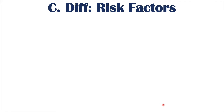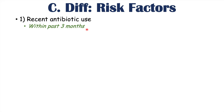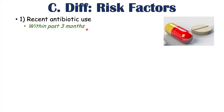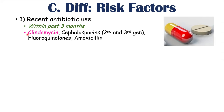Recent antibiotic use is the major risk factor for getting a C. diff infection, and recent can mean within the past three months — even up to 10 to 12 weeks earlier. Particular antibiotics more likely to cause C. diff include clindamycin, which is the major one, as well as second and third generation cephalosporins, fluoroquinolones, and amoxicillin and other penicillins. Many other antibiotics can increase the risk as well.